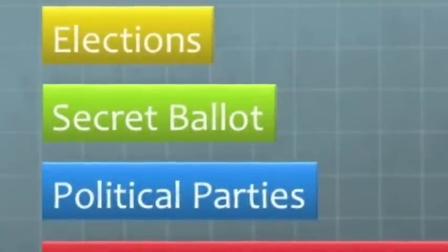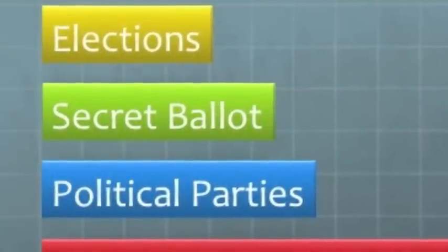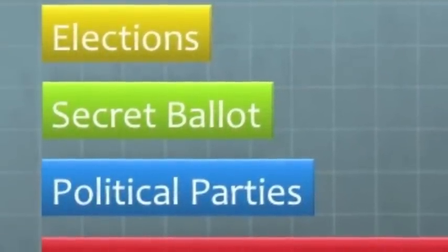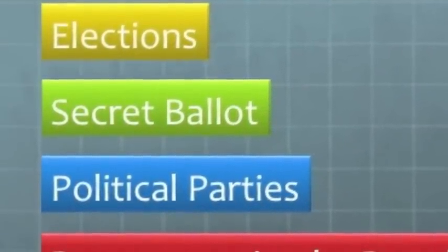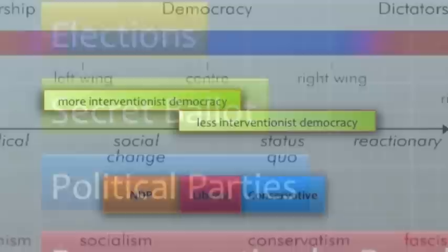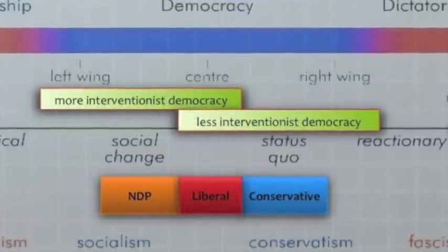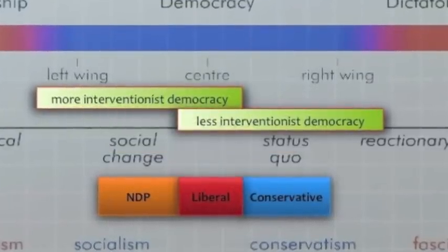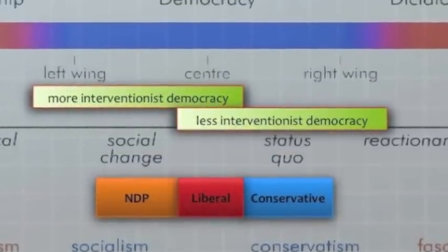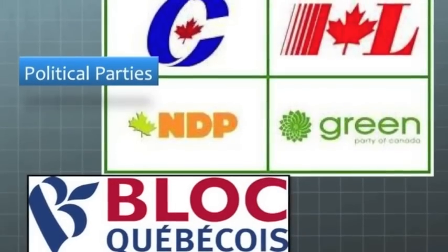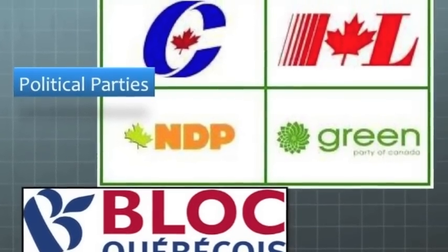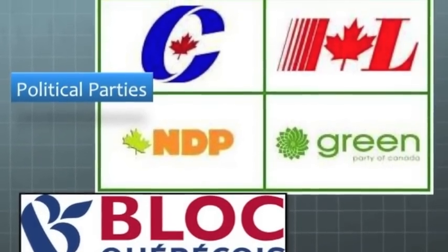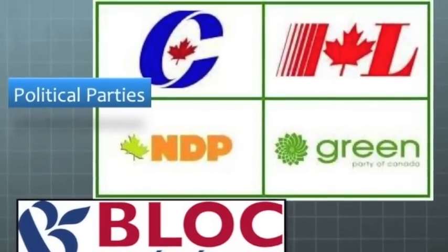When we vote, we're usually voting for a party that we'd like. Political parties help us to know who to vote for. These are groups of people with similar views or ideological beliefs. In Canada, we have five main political parties to vote for in federal elections.